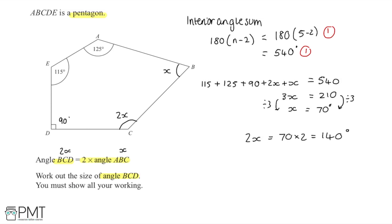The third mark is for a process to start finding the angle ABC so for summing together all of these and setting up the equation here. And then another mark is going to be for further process to find this angle so for having this line here of 3x being equal to 210. And then the final mark is going to be for the final correct answer here of 140 degrees for this question.